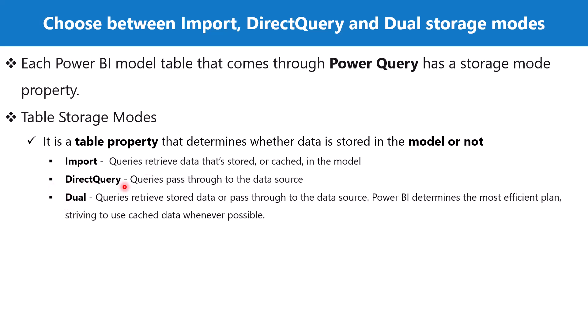The second storage mode is Direct Query, where queries pass through to the data source. This is very important: if you connect using Direct Query mode and load data into Power BI Desktop, none of that data is inside the Power BI data model. The data remains inside the data source. All we have is a snapshot of the schema of the tables, but the data is not part of the data model.